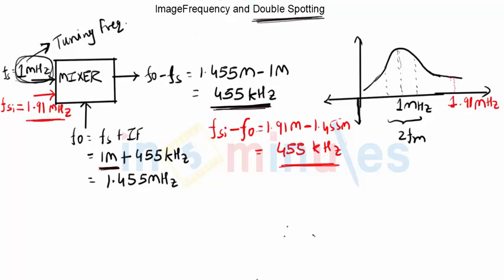Double spotting happens because when my receiver was tuned to 1 megahertz, a frequency of 1.91 megahertz also entered into the receiver, which should not have happened. We conclude that FSI of 1.91 megahertz acts as the image frequency when the receiver is tuned to 1 megahertz. Let us discuss what image frequency is in the next video clip.